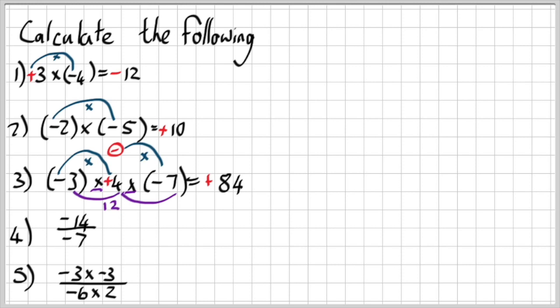Now let's quickly look at question four. Question four is negative 14 divided by negative seven. Now if I start with the signs again, I'm going to start by saying a negative divided by a negative, that is a positive. If I take the 14 and I divide it by seven, the answer is two. And there's your answer.